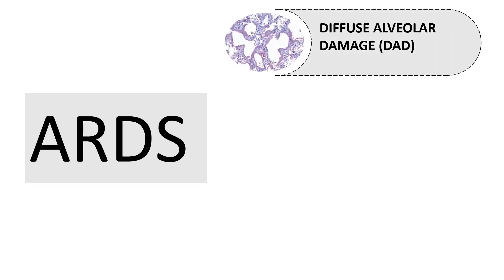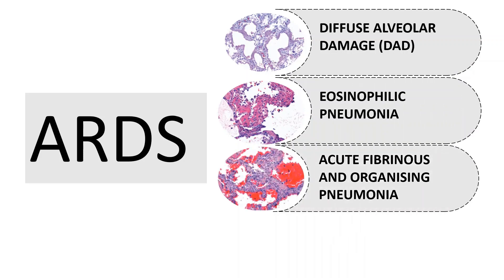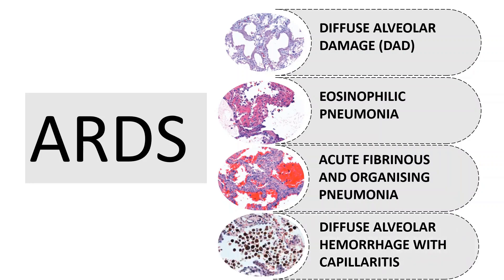Acute lung injury and ARDS are two entities that have precise definitions from a clinical standpoint. However, from a pathologic standpoint, most of these cases present with any of the four histological patterns: diffuse alveolar damage, acute eosinophilic pneumonia, acute fibrinous and organizing pneumonia, and diffuse alveolar hemorrhage with capillaritis. Diffuse alveolar damage is the most common pattern encountered.